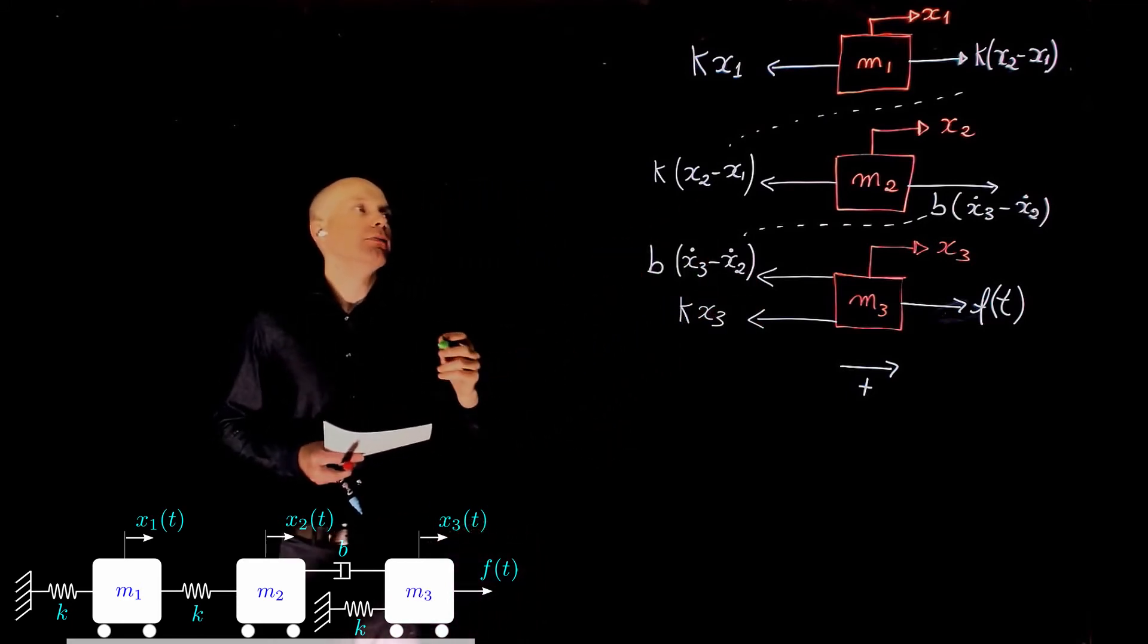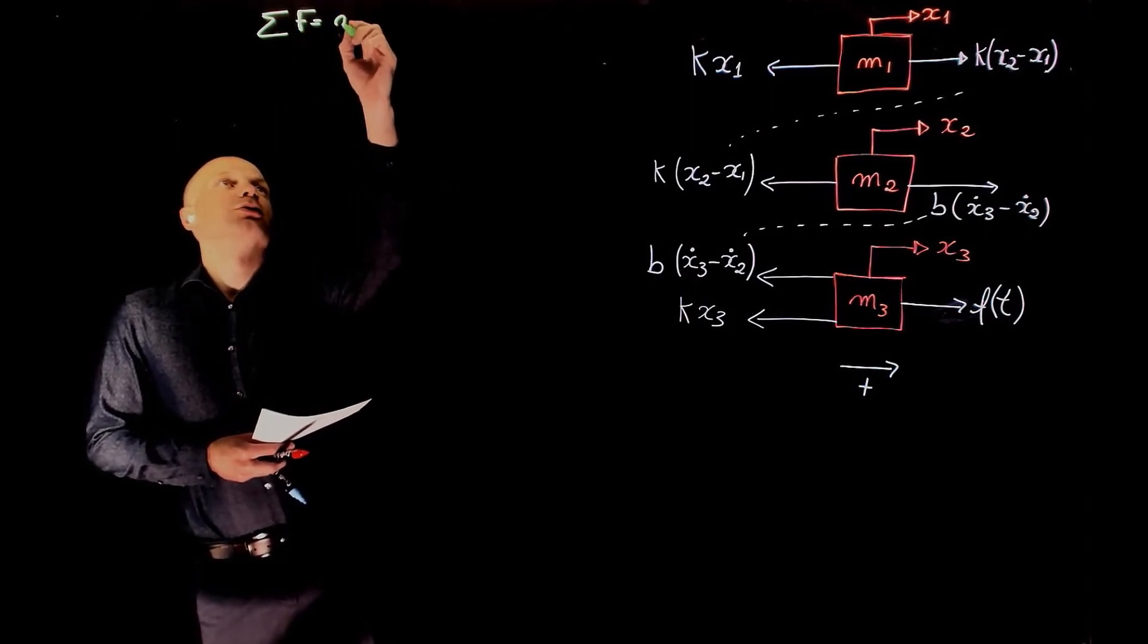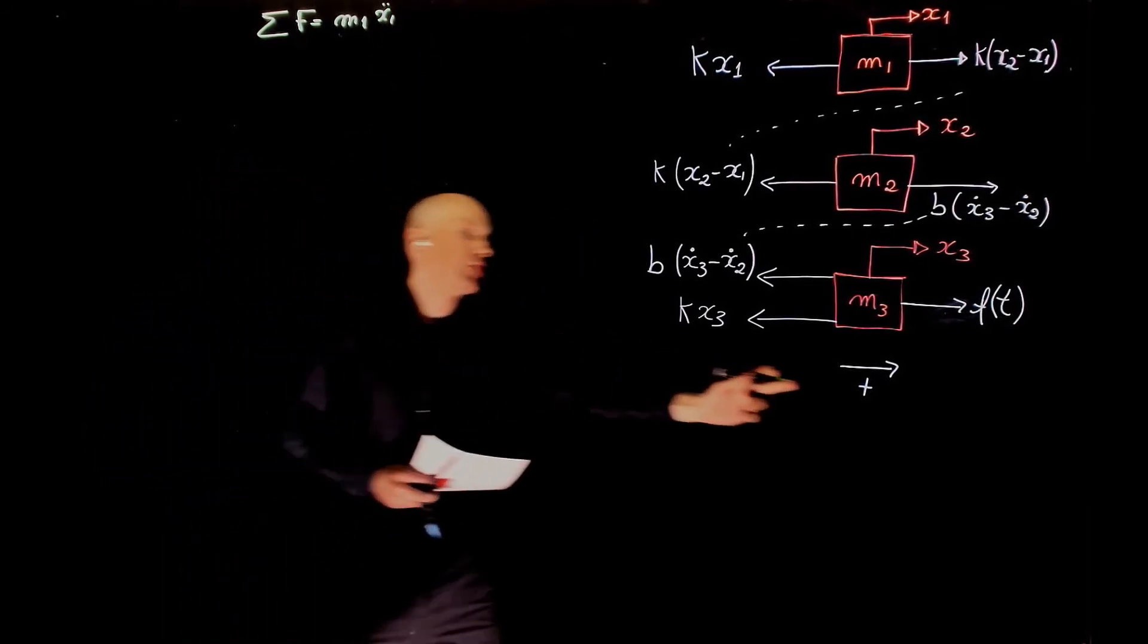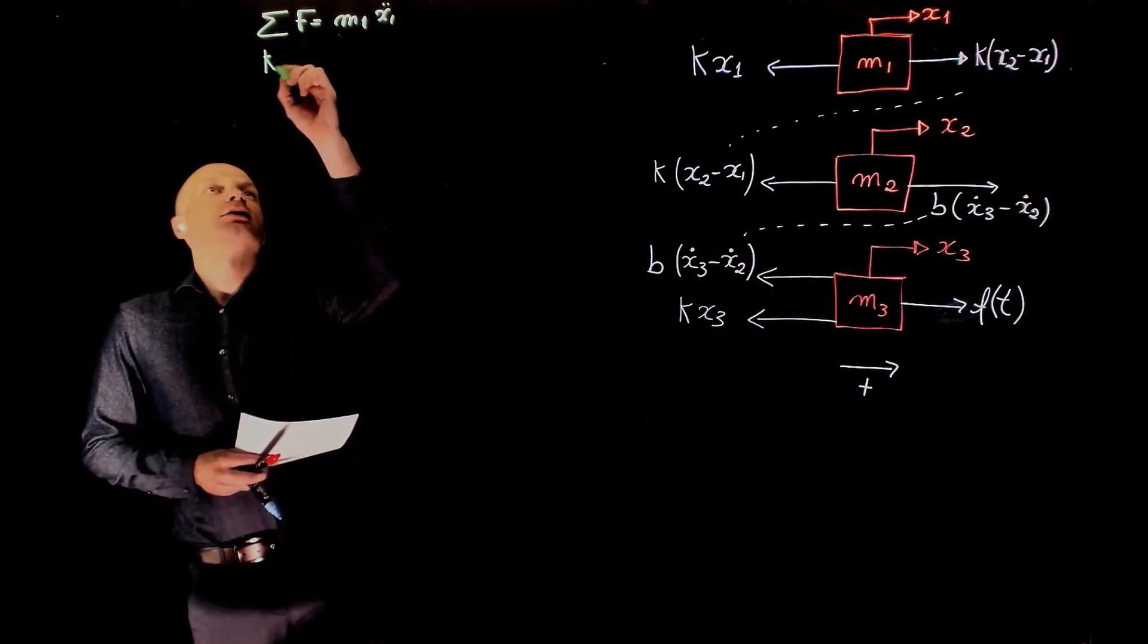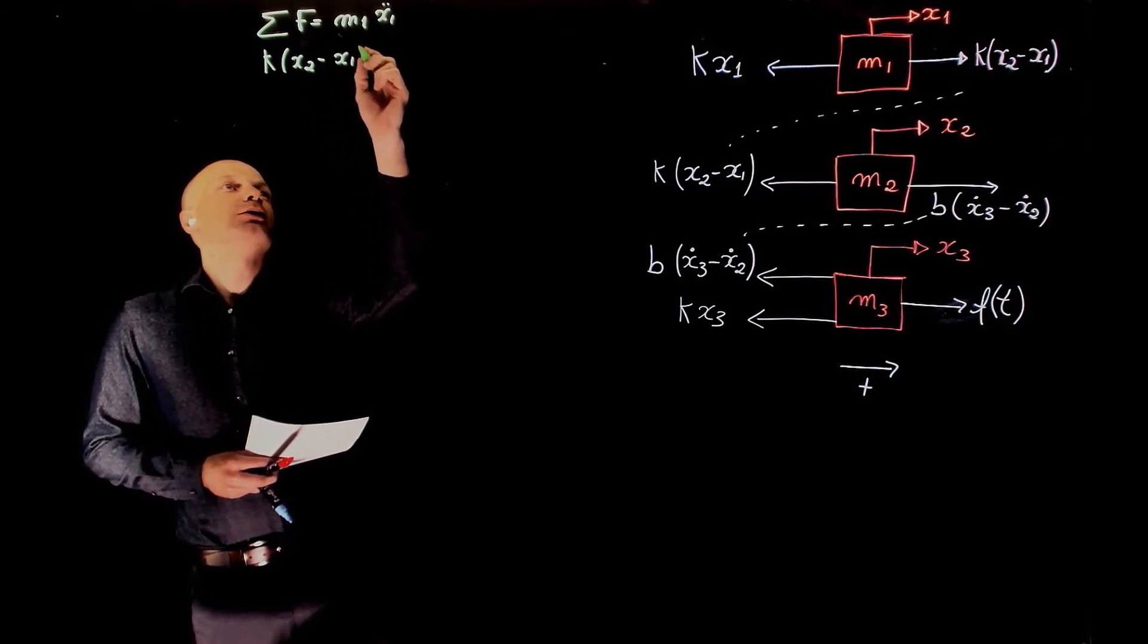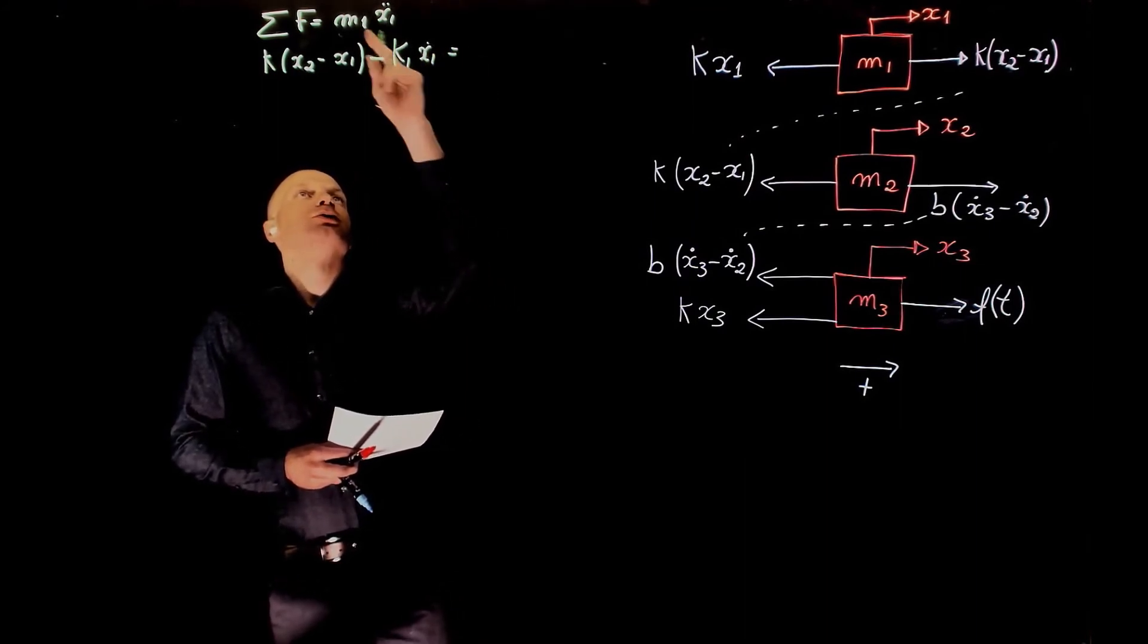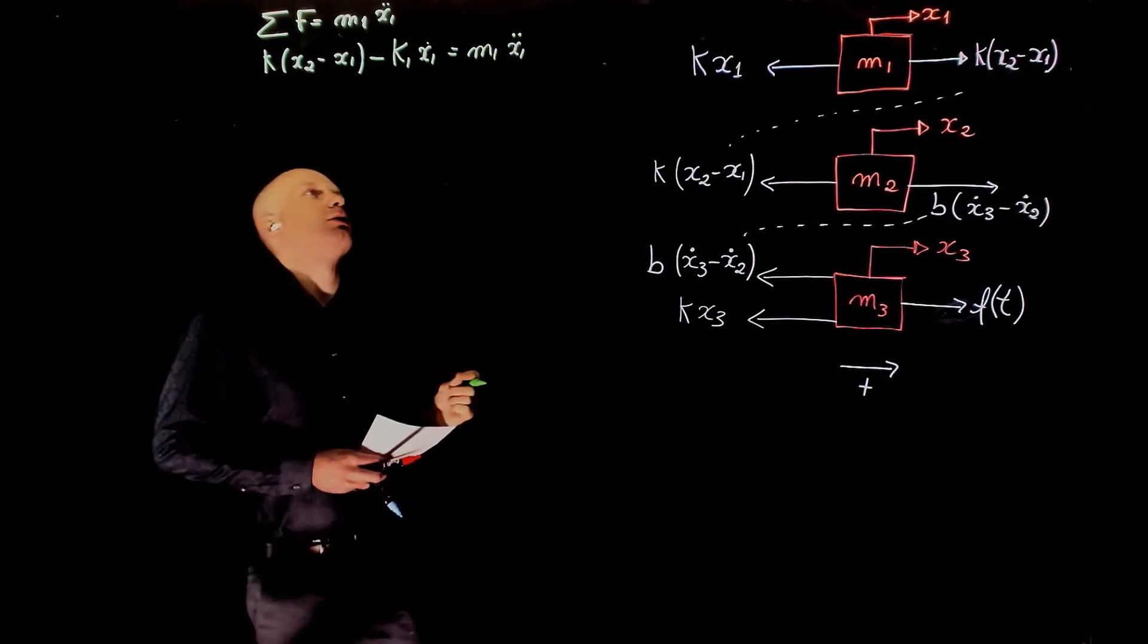Starting with mass m1, we have the sum of forces equals to the mass times acceleration of mass m1. According to our convention, forces going to the right are positive, so we have k(x2 minus x1) minus k x1 equals to m1 x1 double dot.